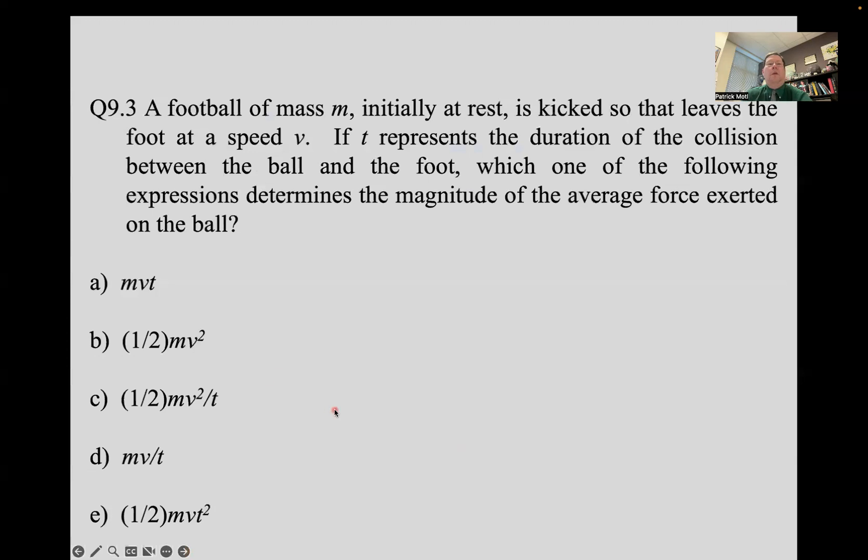Okay. Let's try another one. A football, mass M initially at rest is kicked, so that it leaves the foot at a speed V. If T represents the duration of the collision between the ball and the foot, which one of the following expressions determine the magnitude of the average force exerted on the ball. So a little dimensional analysis, which of these could give us the magnitude of the average force. So go back to the impulse momentum theorem. When you're ready to go ahead with the answer, I'll pause the video and we'll join back up.